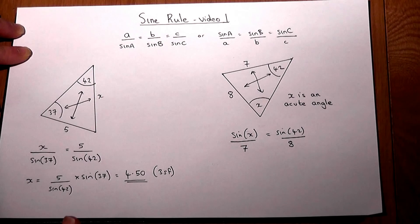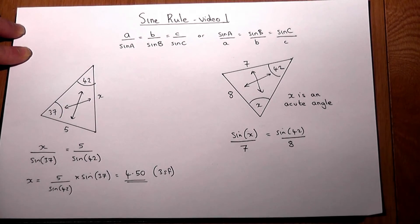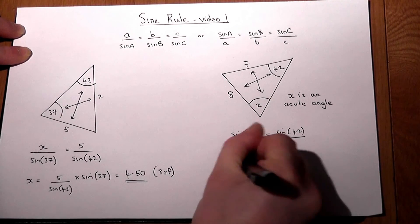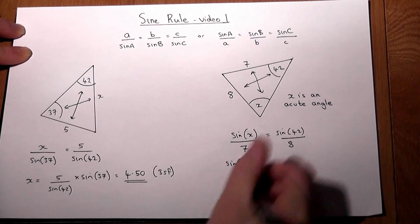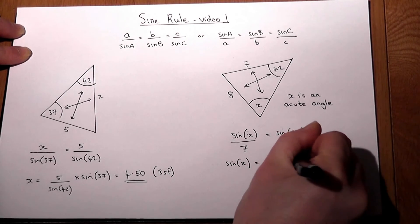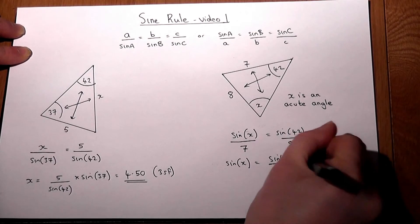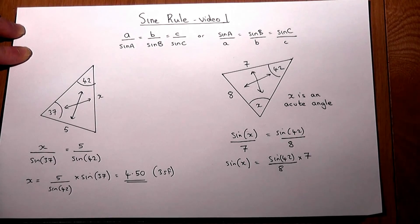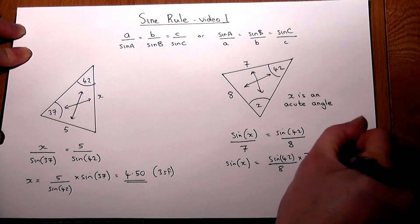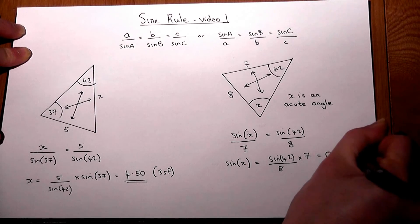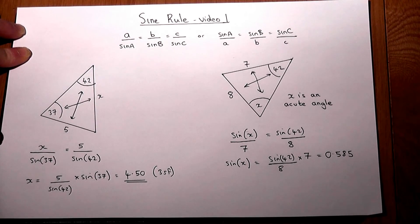To solve this equation requires two steps. We first of all must times up by the 7. So this tells that sine of X is sine 42 over 8 times by 7, which works out at 0.585 to 3 decimal places.